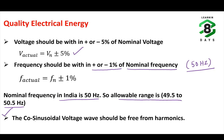The third important parameter that decides quality is that the voltage waveform should be free from harmonics. The voltage wave received at customer premises should be a pure sinusoidal wave. If the electrical supply maintains all these three parameters within the allowable tolerance range, we say the customer is receiving quality electrical energy.